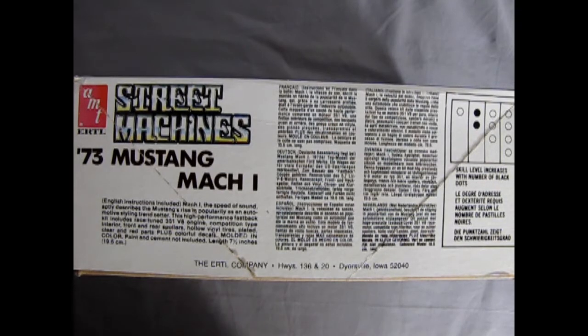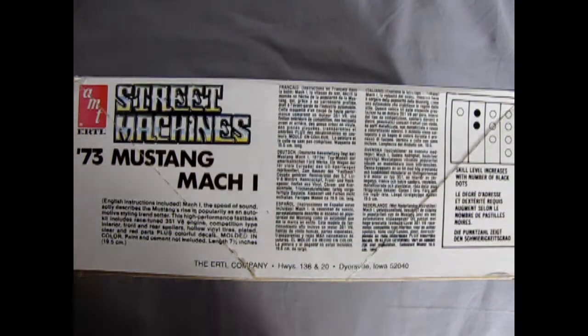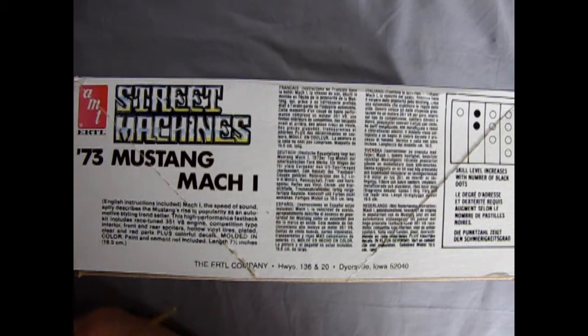On the opposite side of the box we see this kit is a skill level 2. It has English instructions included. Mach 1, the speed of sound aptly describes the Mustang's rise in popularity as an automotive styling trendsetter. This high-performance fastback kit includes Race-tuned 351 V8 engine, competition type interior, front and rear spoilers, hollow vinyl tires, plated clear and red parts, plus colorful decals.